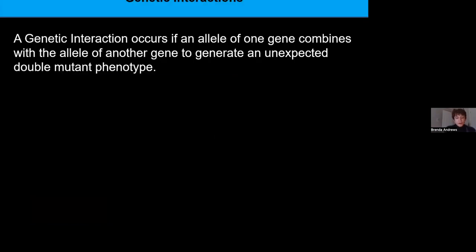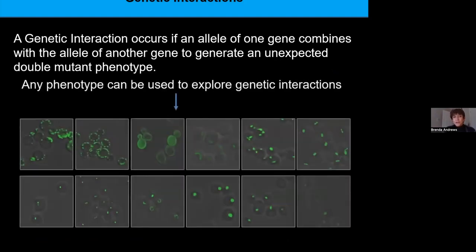A genetic interaction occurs if an allele of one gene combines with the allele of another gene to generate an unexpected double mutant phenotype. We can use any phenotype to explore genetic interactions — for example protein localization and abundance, or the morphology of subcellular compartments — as was just described.